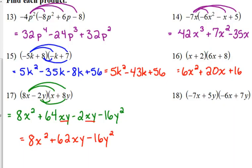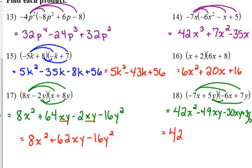It stays right in the middle, and I know that's kind of weird because you'd want to slide that to the end because they don't have as high of a power, but yeah, we do leave it in the middle. Number 18, negative 7 times negative 6, positive 42. x times x is x². The outside gives us minus 49xy. The inside gives us negative 30xy. And the last gives us plus 35y². So, we have 42x² minus 79xy plus 35y² for our answer.